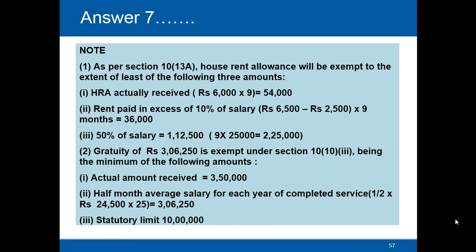Now let us solve question number 7. First we will make the HRA calculation. As per Section 10, house rent allowance is exempt to the extent of the least of the following three amounts. First, actual HRA received is rupees 6,000 for nine months, which comes to rupees 54,000. Second, rent paid in excess of 10% of salary: rent paid is 6,500 and 10% of salary is 2,500 per month, so 6,500 minus 2,500 into nine months comes to rupees 36,000. Third, 50% of salary: salary is 25,000 per month for nine months giving 2,25,000, and 50% of that is rupees 1,12,500. The least amount is rupees 36,000.